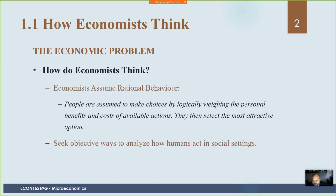We also seek objective ways to analyze how humans act in social settings. If you think of a market, there's a lot of things that can go on there — it can be quite complex. When we do our model of supply and demand, we make some simplifying assumptions about how buyers and sellers would behave. Economics is a little different than many other courses because it's a little more abstract. We have a lot of 'what ifs' rather than 'what is,' and we make models that simplify reality. But in doing that, we get a good framework to think about complex behavior in the real world.